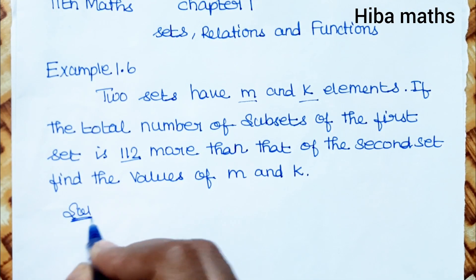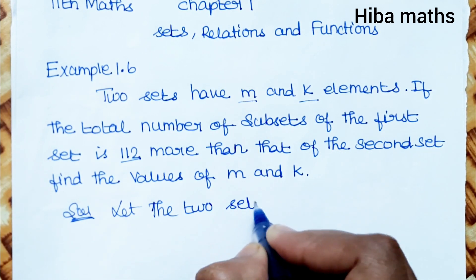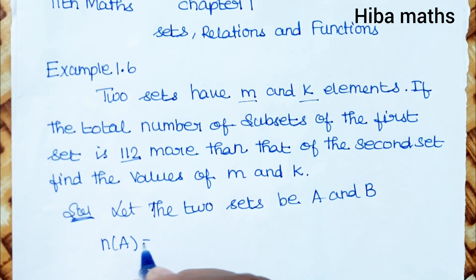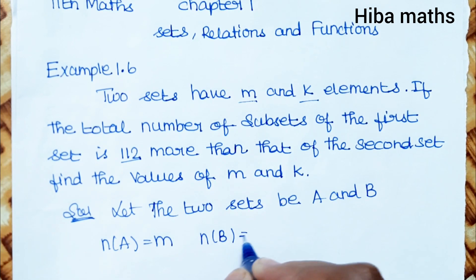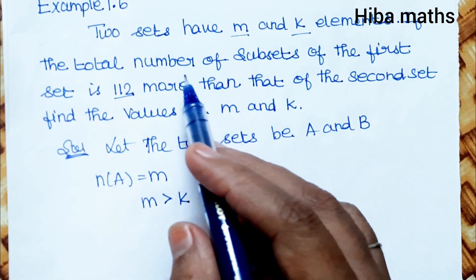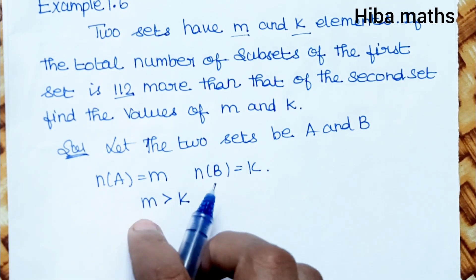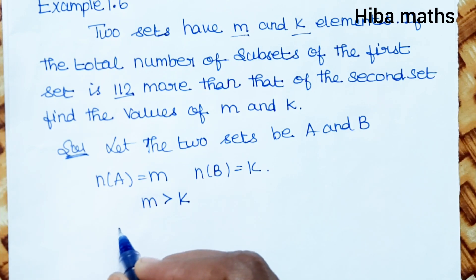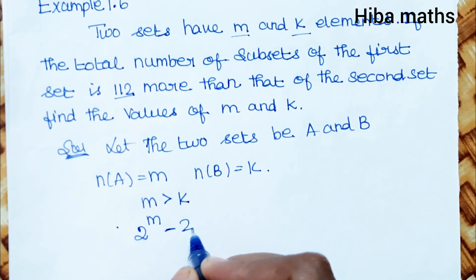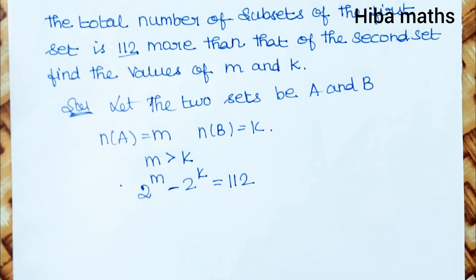Let the two sets be A and B. n(A) = M, n(B) = K, where M > K. The number of subsets is 2 power N. Here is M, so 2^M minus 2^K equals 112.